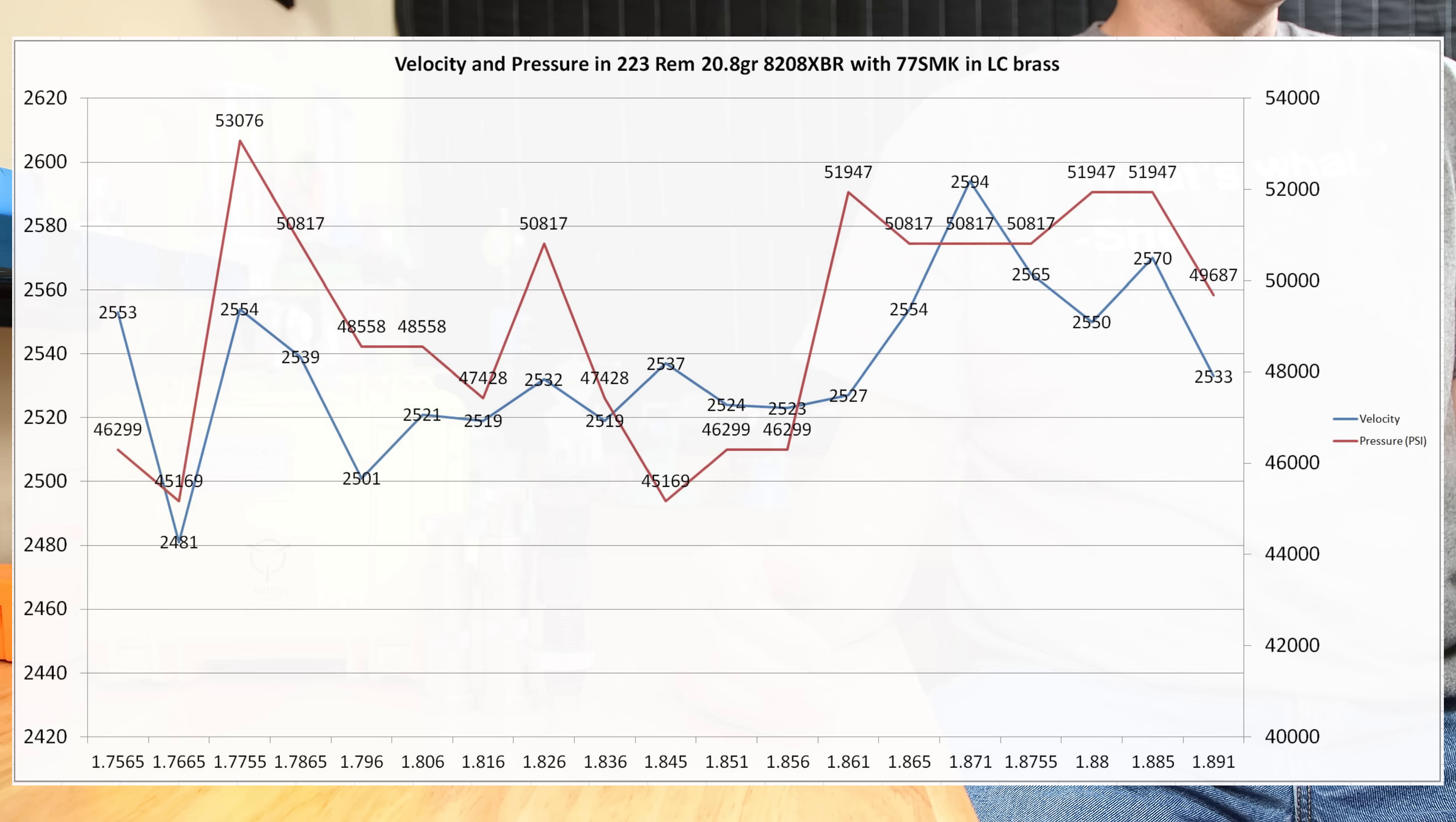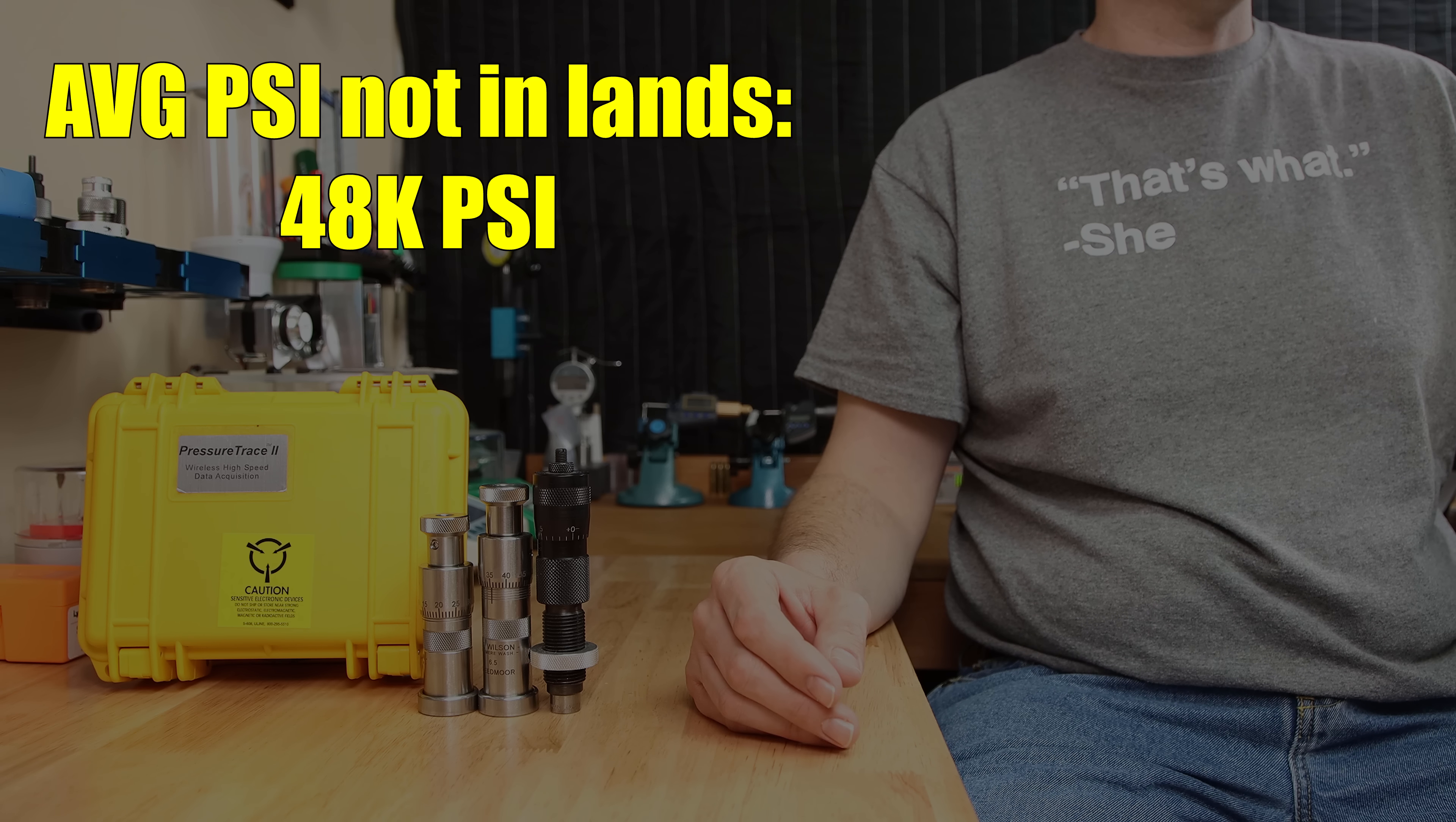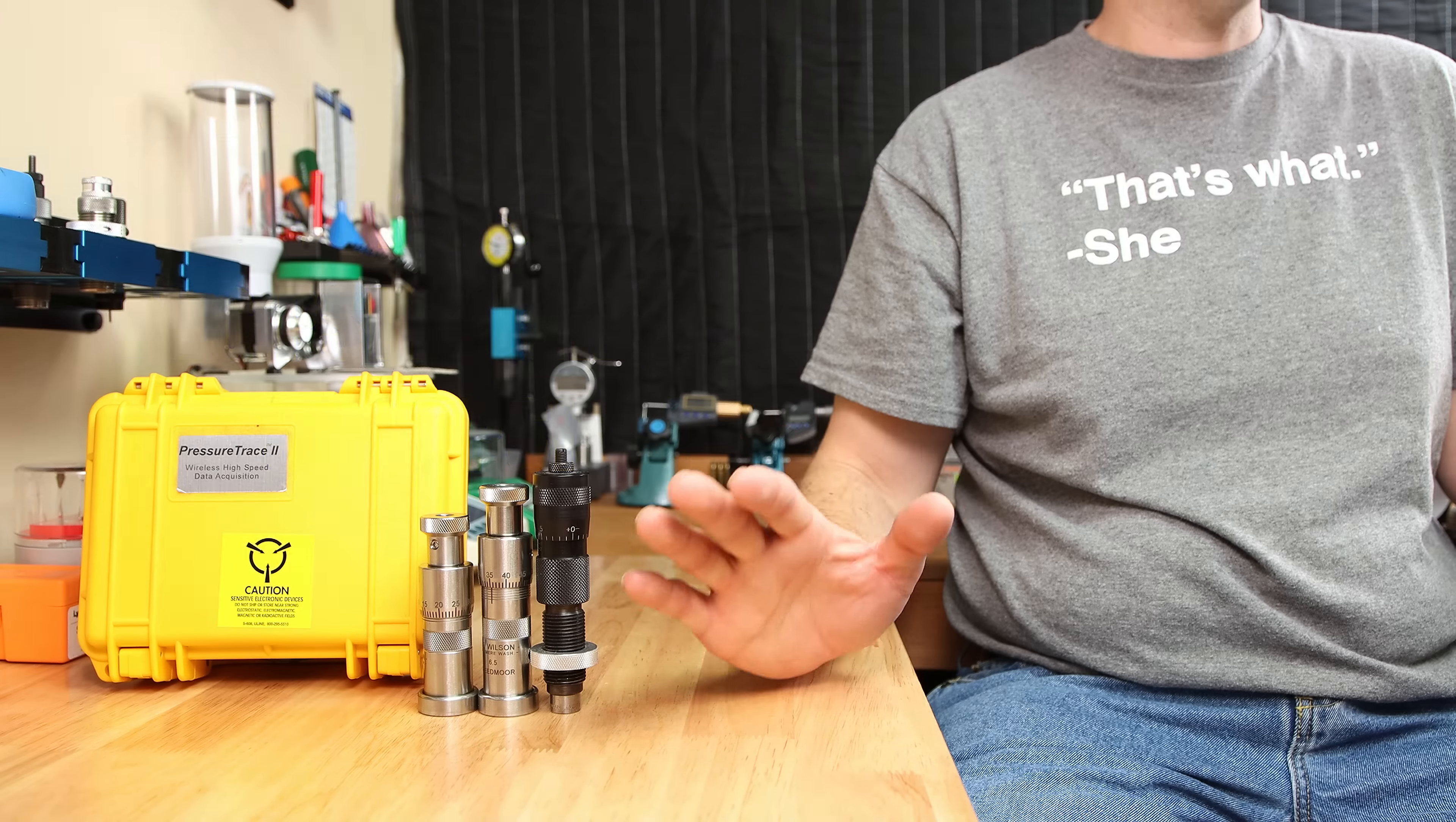If we average all the peak pressures we saw from a CBTO of 1.7565 to 1.856, the average peak pressure of this load is 48 thousand PSI. If we average the peak pressures from 1.861 inches to 1.891 inches, the average pressure is 51.1 thousand PSI. So, is it higher? Absolutely. But we're only talking 3 thousand PSI here. Certainly a pressure change of less than 10 percent.